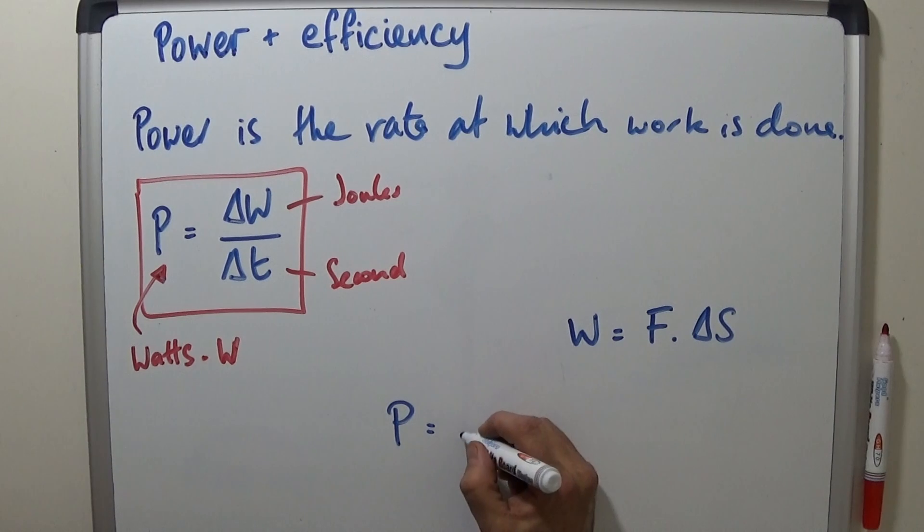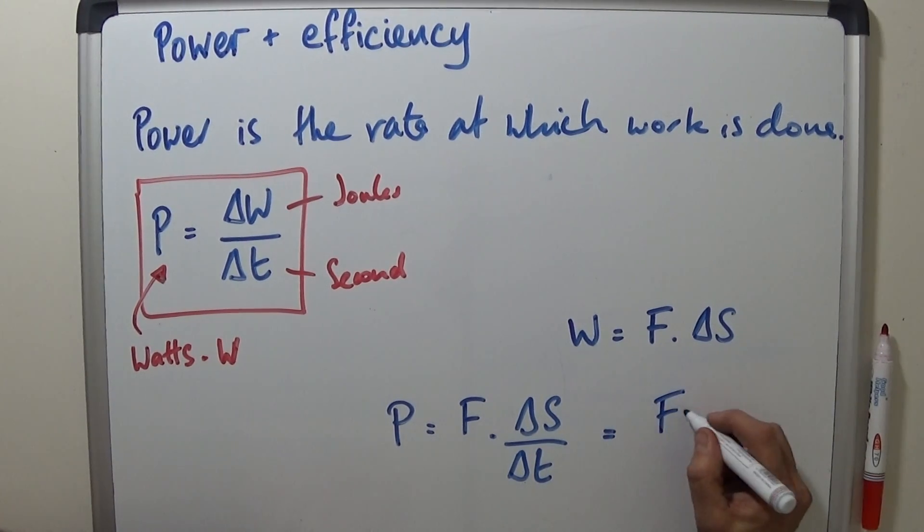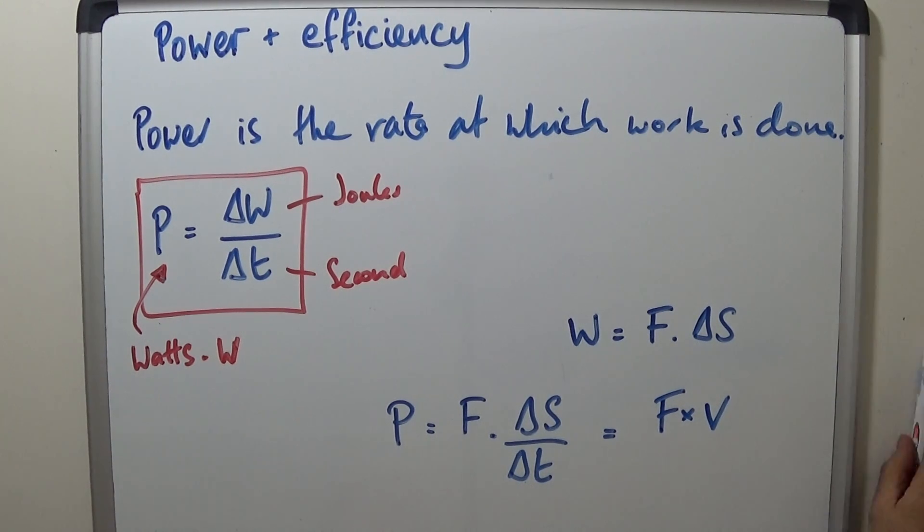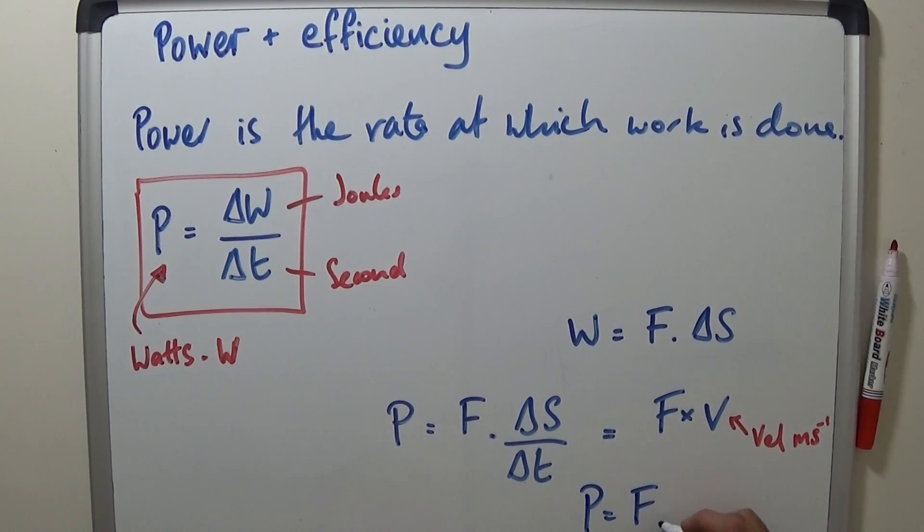We can say power will be force times change of displacement over change of time, which is equal to force times by the velocity. So that would be velocity in meters per second. And that's really handy. This little equation here, P equals FV.